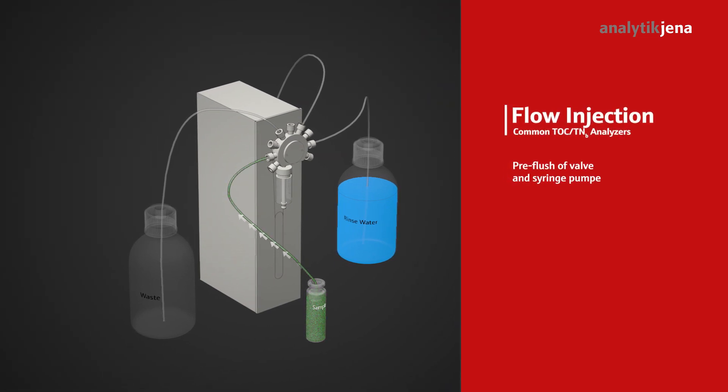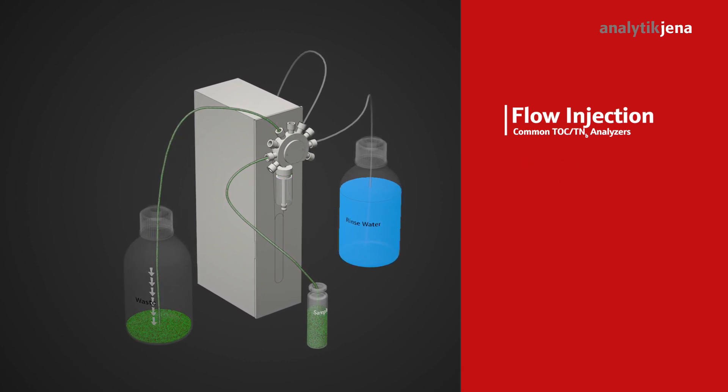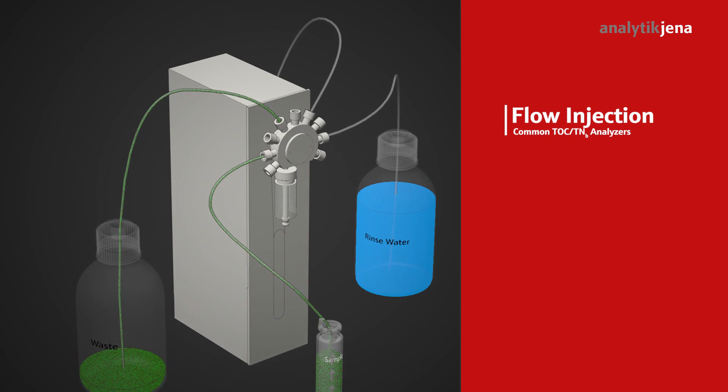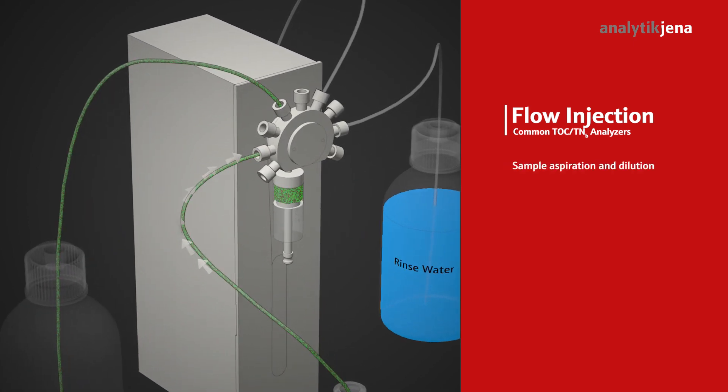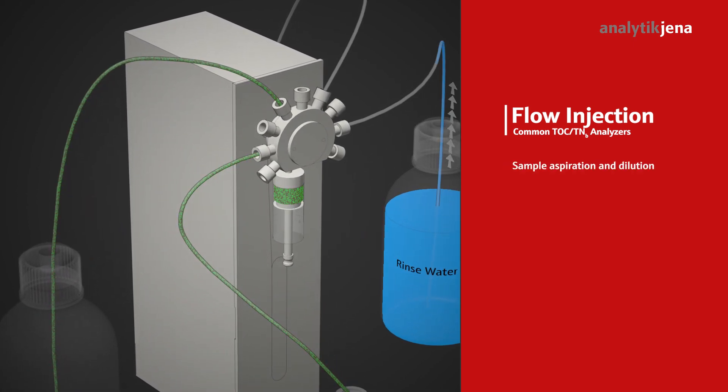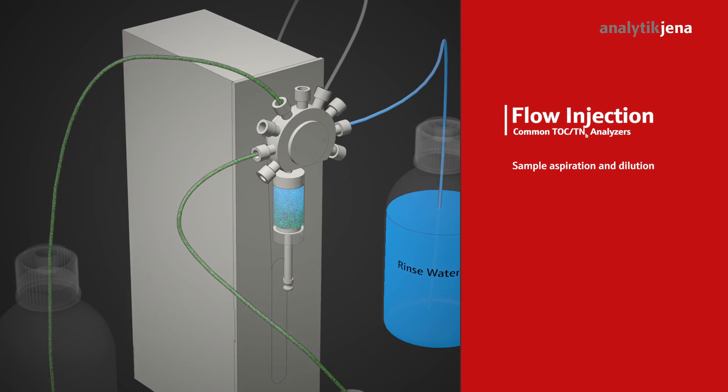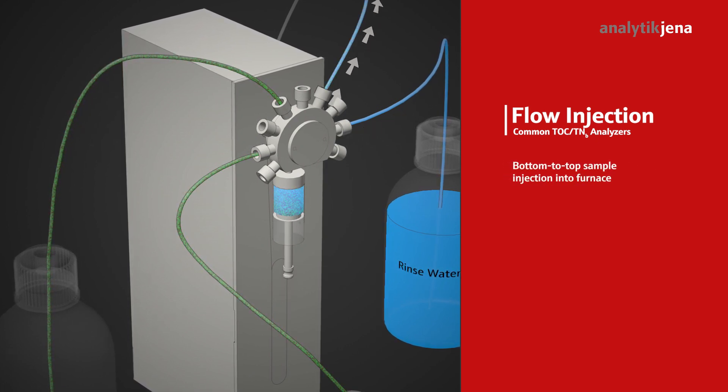Most TOC and TNB analyzers have thin tubes and the sample is aspirated directly into the syringe pump, leading to particle sedimentation and material wear. Sample dilution is necessary to avoid overloading the detector or exceeding the calibration range.